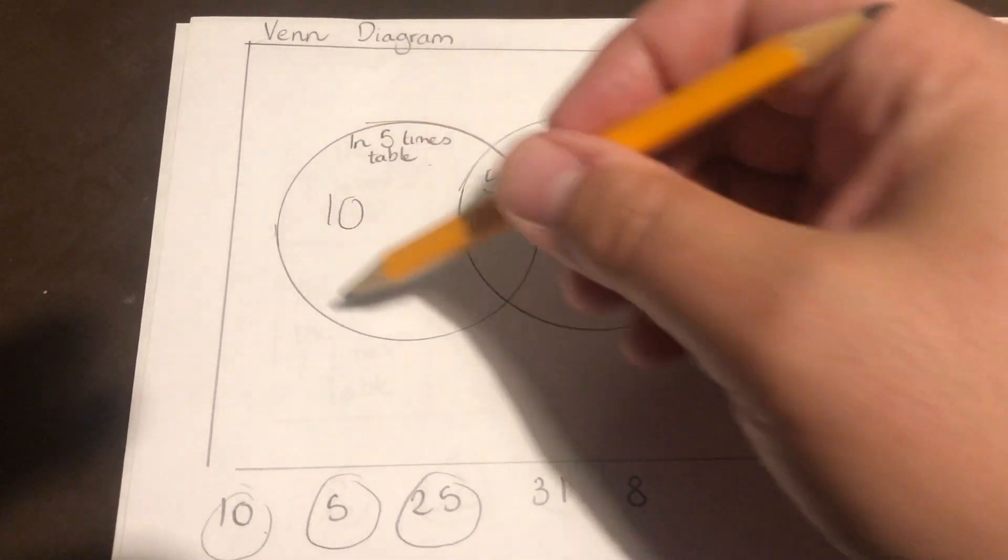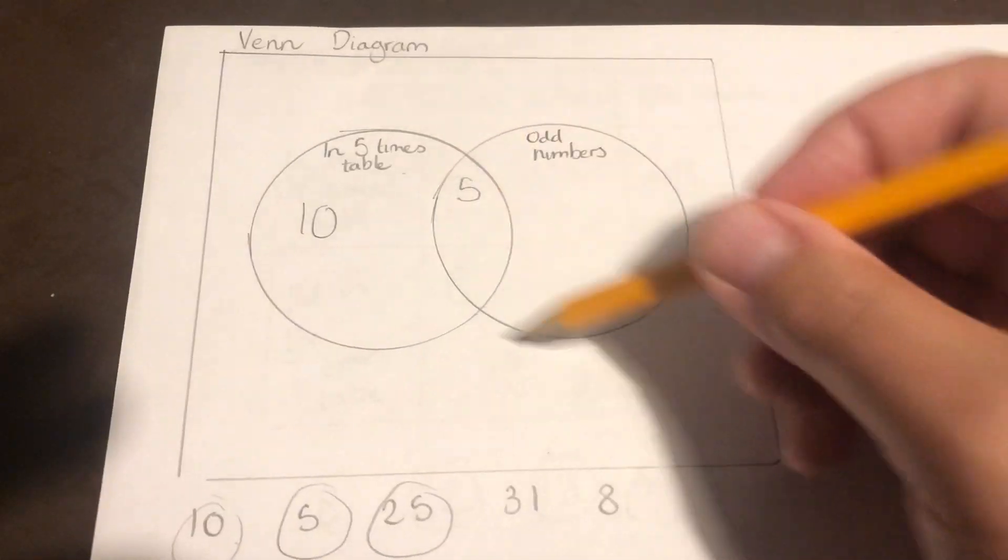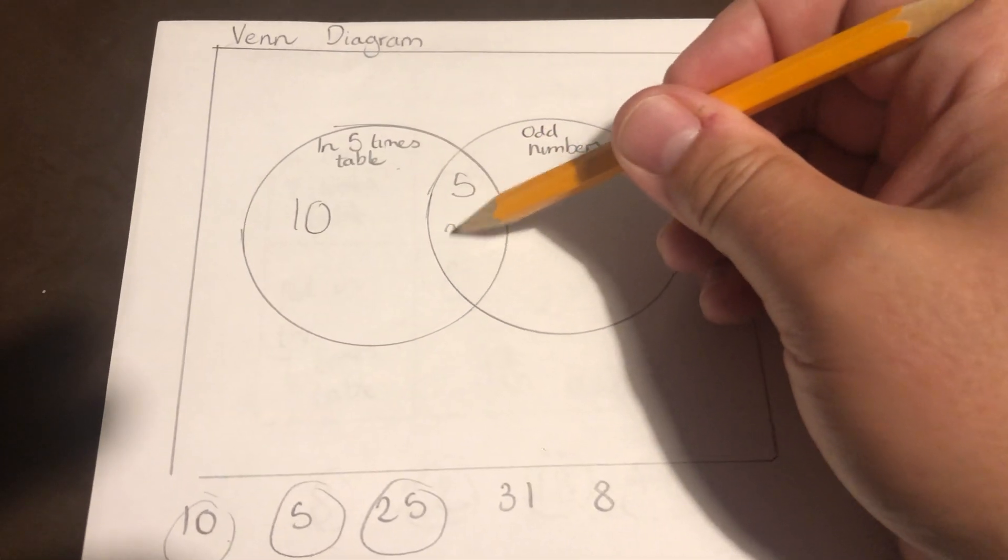25, that is in the five times table, but again, that's an odd number, so it's got to be in this circle also. So that's going to go in both.